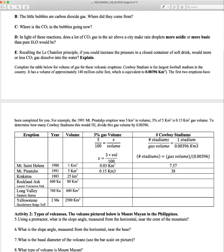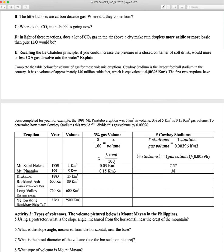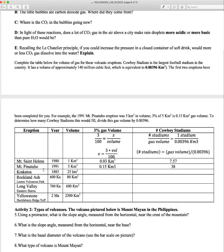We're going to compare the amount of gas in the magma to Cowboy Stadium in Dallas, Texas. Apparently this stadium is the largest football stadium in North America — 140 million cubic feet in volume, equivalent to 0.00396 cubic kilometers. The table includes some historic eruptions, including some really important ones especially in California. I've given you the dates of these eruptions and their volume, how much magma was erupted. You need to calculate what 3% of that magma is, and then of that 3%, how many Cowboy Stadiums it would fill.